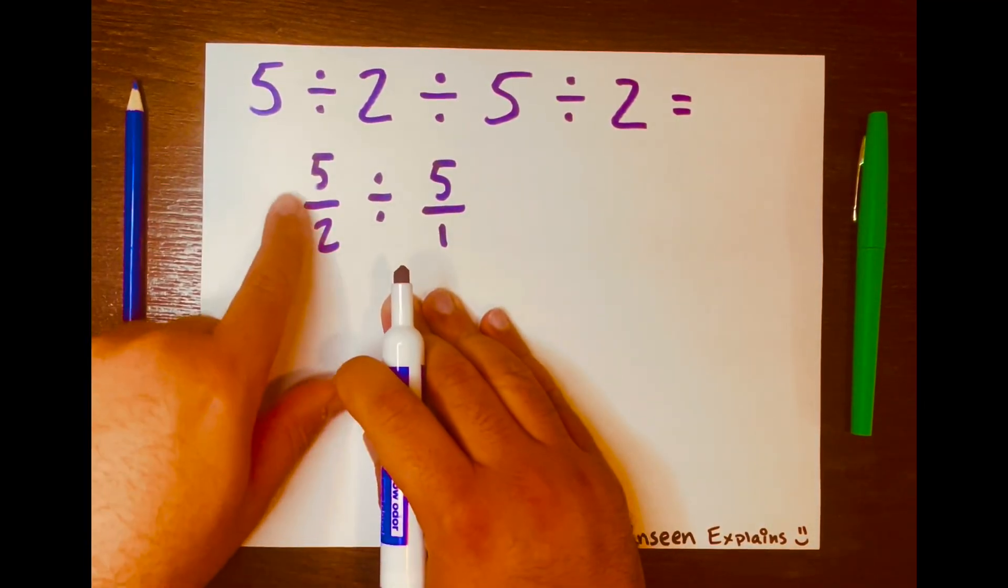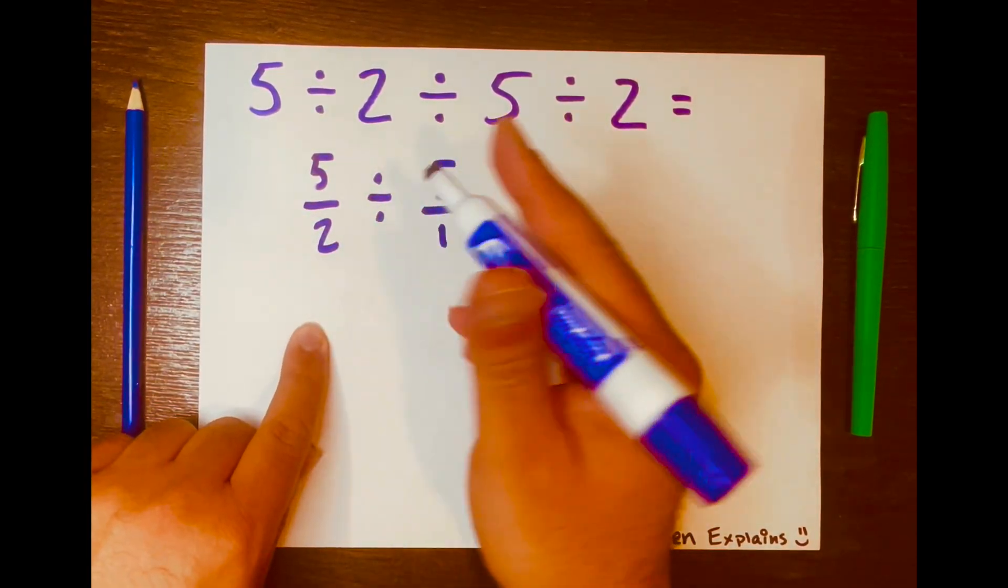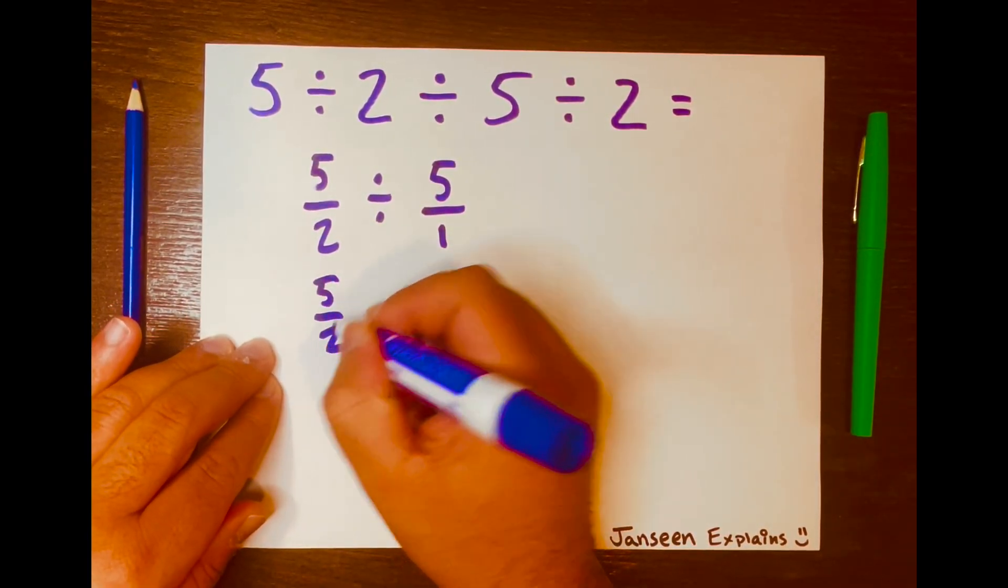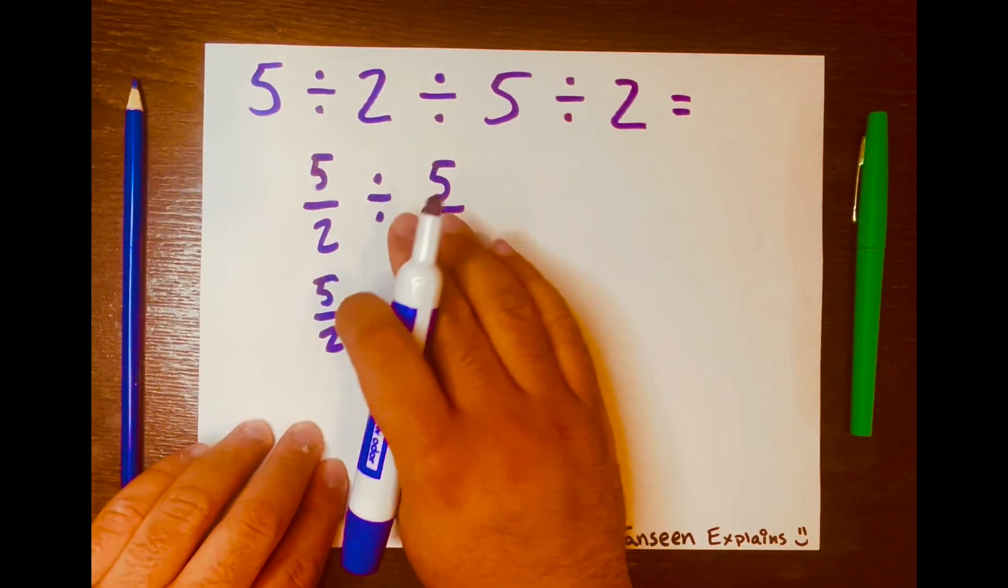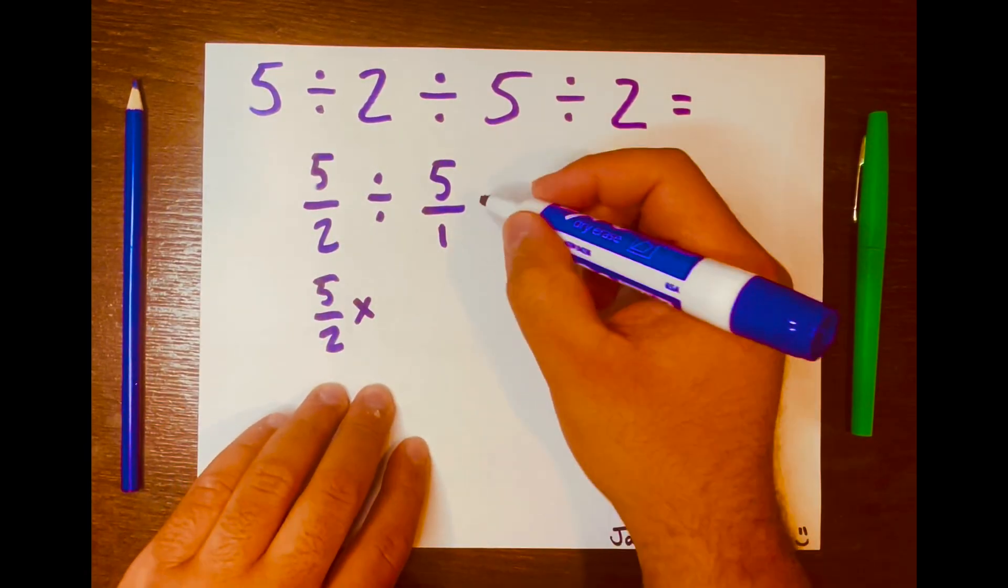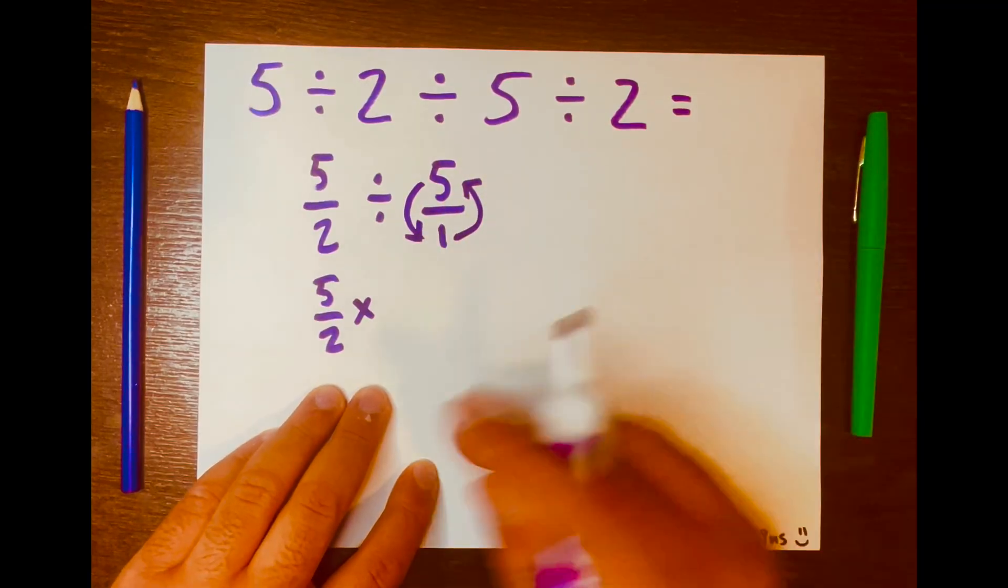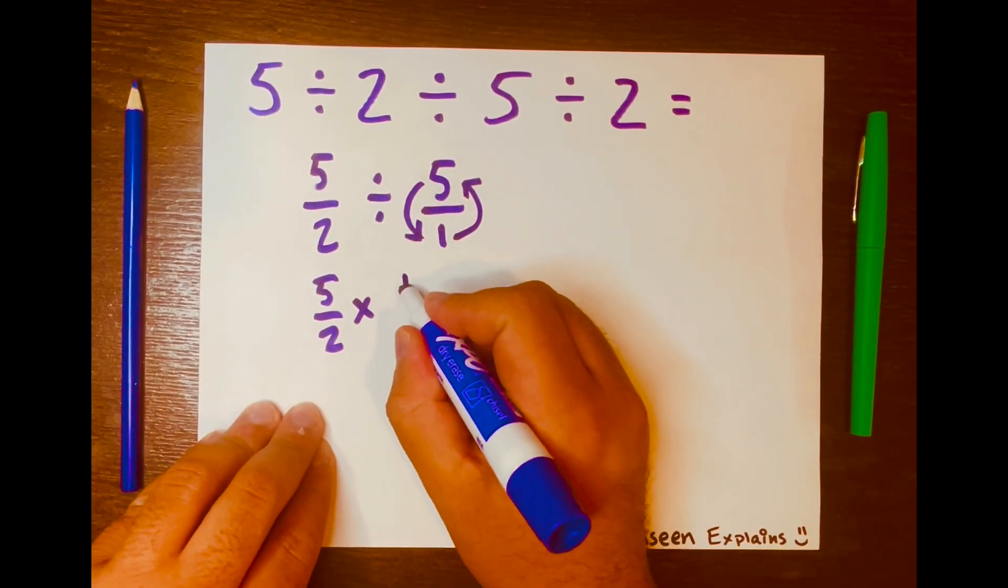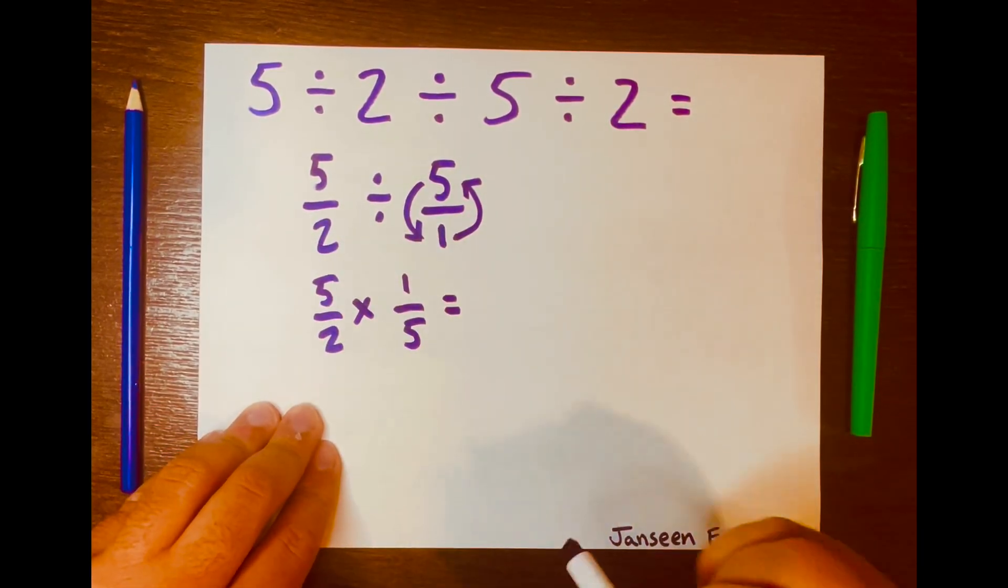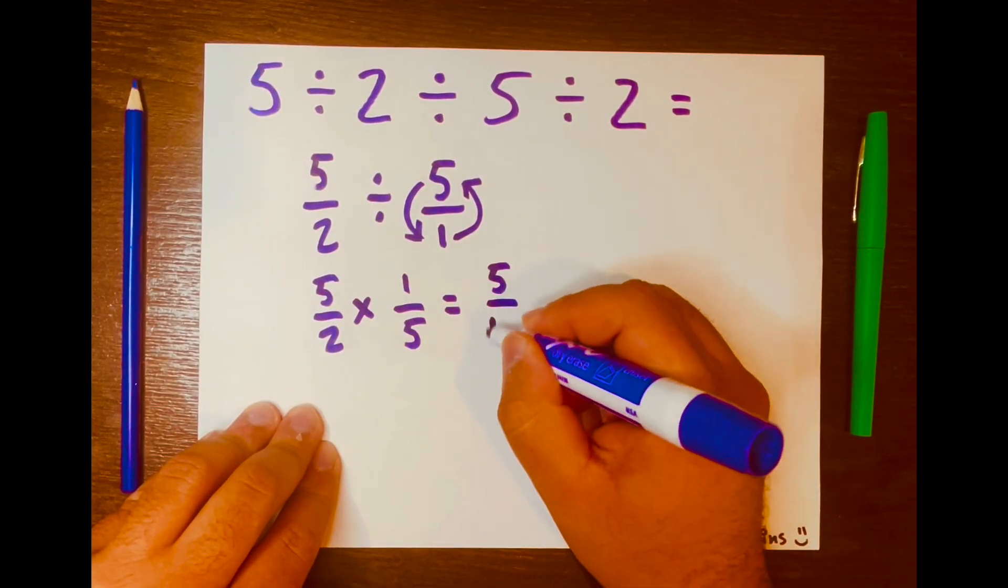Let's tackle this problem. So 5 over 2 divided by 5 over 1, we'll use the keep change flip method. It'll be written like this: 5 over 2. We keep this part, and we change that division symbol to multiplication. Then we'll flip this fraction, so the 1 will go on top and the 5 will go at the bottom. That will be written like this: 1 over 5. Now we just multiply across. So 5 times 1 is 5, and 2 times 5 is 10.